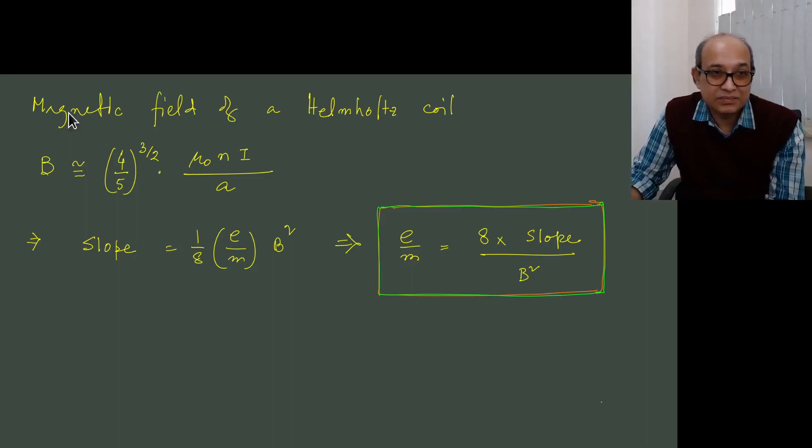Now this is the formula that you use for calculating B. And so the slope that you determine is E by m, easy to calculate, and this is your final formula. Thank you.